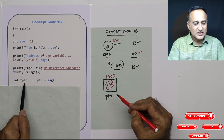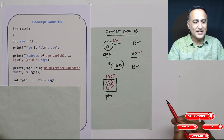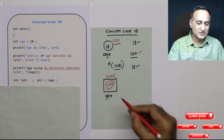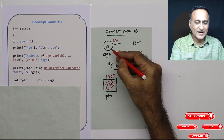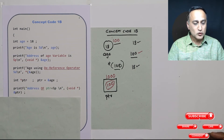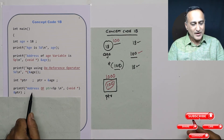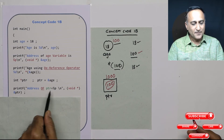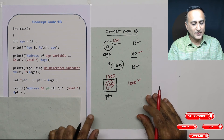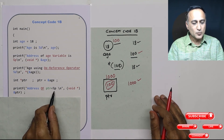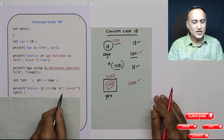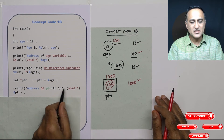Since `ptr` is also a variable, it has its own address. `int *ptr` means `ptr` can only contain addresses of integer type variables — not char, float, or real numbers. When I do `printf("%p", &ptr)`, it is going to output 1000 on the screen, because 1000 is the address of `ptr`. `%p` is the conversion specifier used to print addresses. I used `void*` for consistency, but it's not strictly required here.